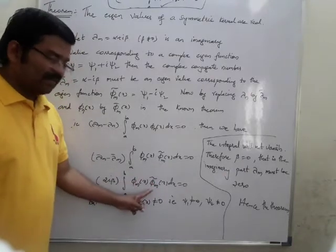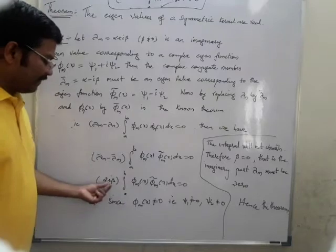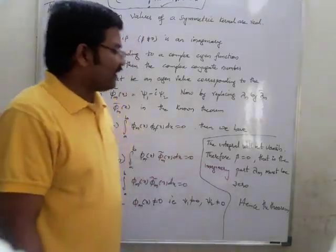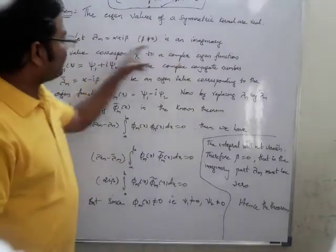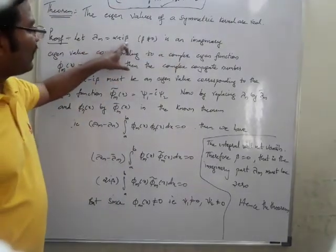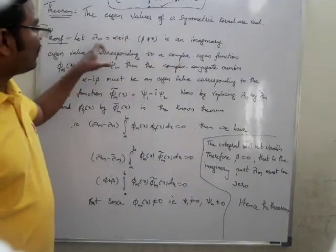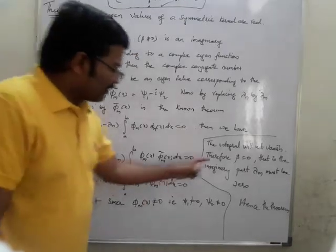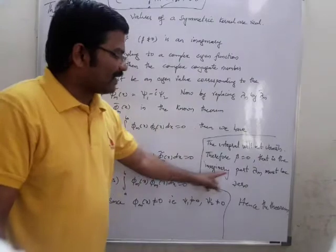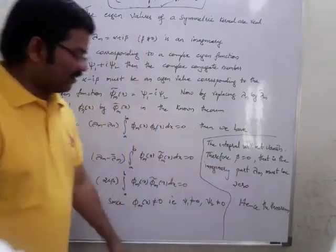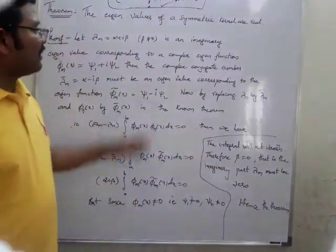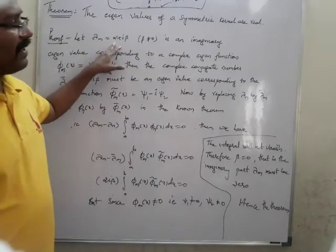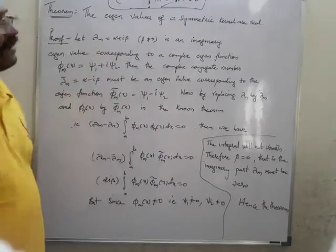Because the integral is not equal to 0, therefore 2i beta must equal 0, which means beta is nothing but equal to 0. When beta is equal to 0, then we can say that lambda m equals alpha plus i times 0, so lambda m equals alpha, which is real. Therefore, beta equal to 0 means the imaginary part of lambda m must be equal to 0, and thus lambda m is nothing but equal to alpha — which is real.